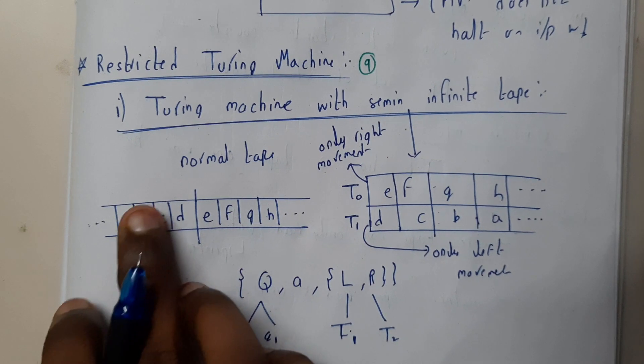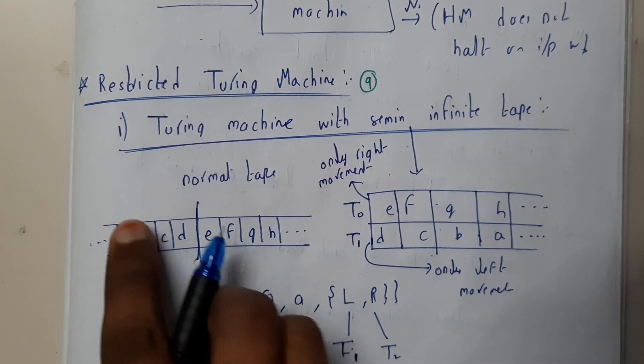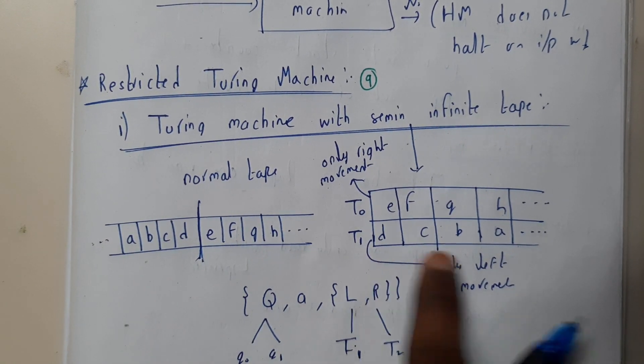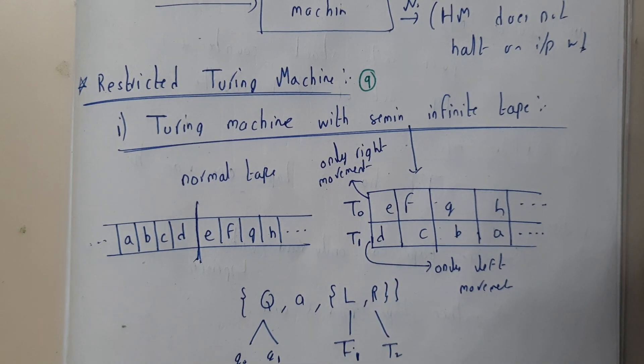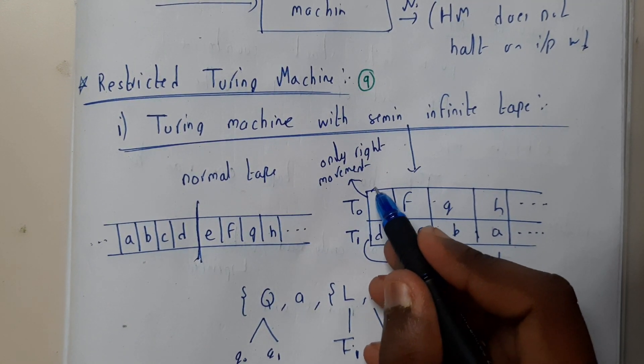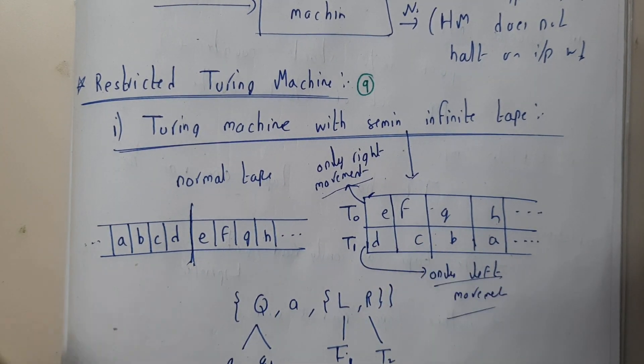If this is the normal tape, we break it into two parts and rotate the left part 180 degrees and attach it here. So T0 and T1 - here this tape can move only right and the below tape can do only left movement.